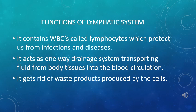The lymphatic system performs three main functions for the body. It contains white blood cells called lymphocytes, which protect us from infections and diseases. It acts as a one-way drainage system transporting fluid from body tissues into the blood circulation. It gets rid of waste products produced by the cells.